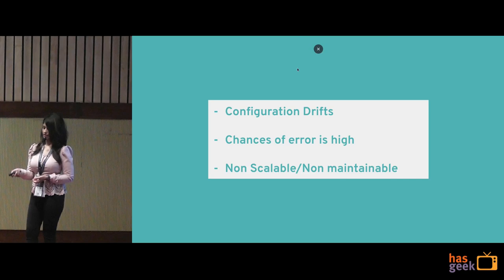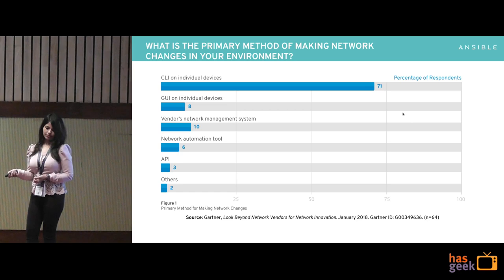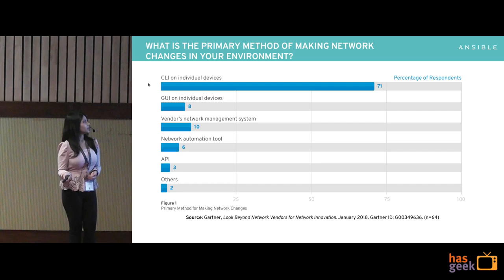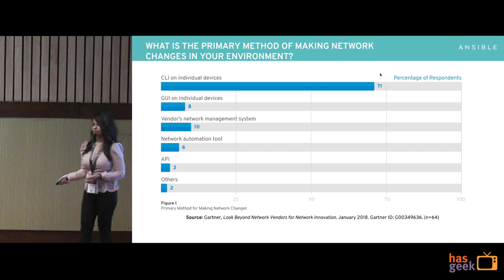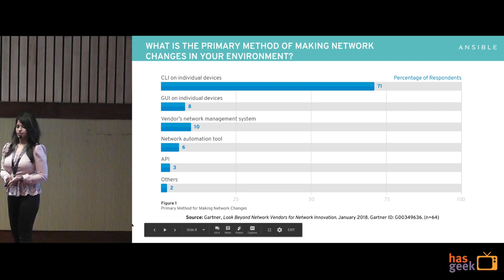This is a survey Gartner Research published in 'Look Beyond Network Vendors for Network Innovation' last January. It shows that almost 71% of people still use SSH manually to network devices for configuration, and automation ranks fourth at only 6%. So this is the current state of network management.